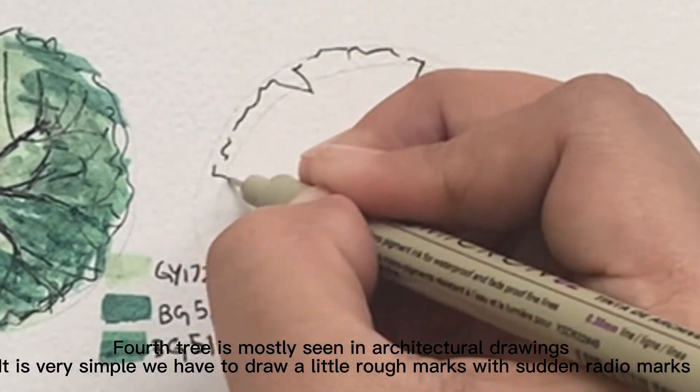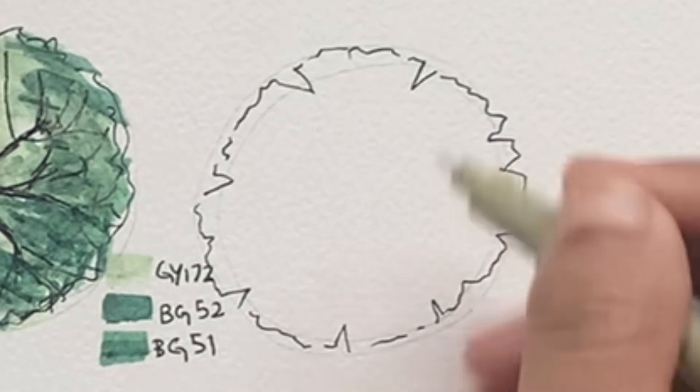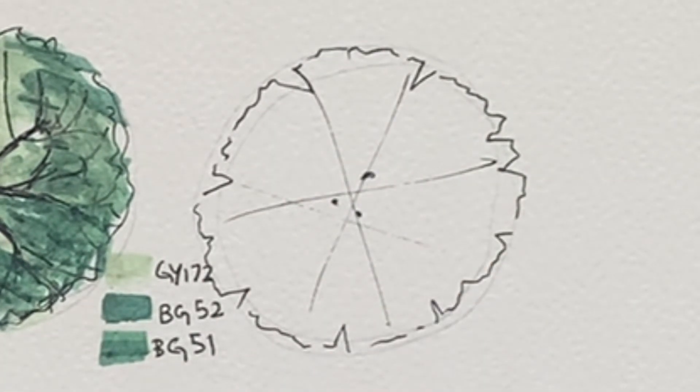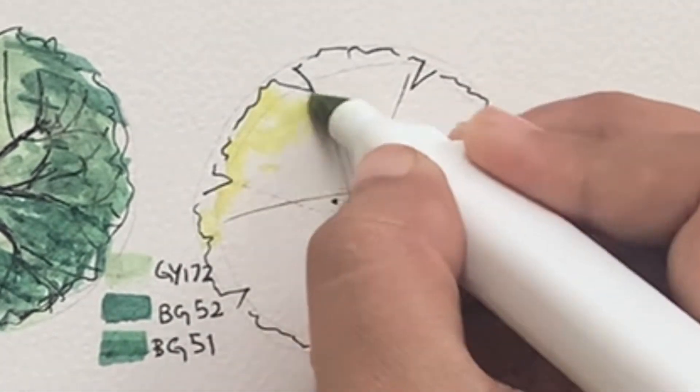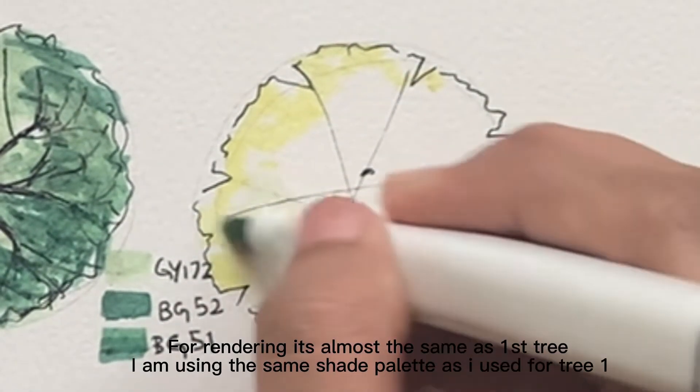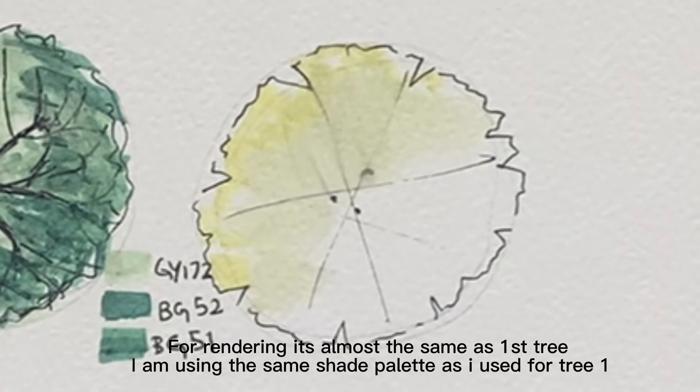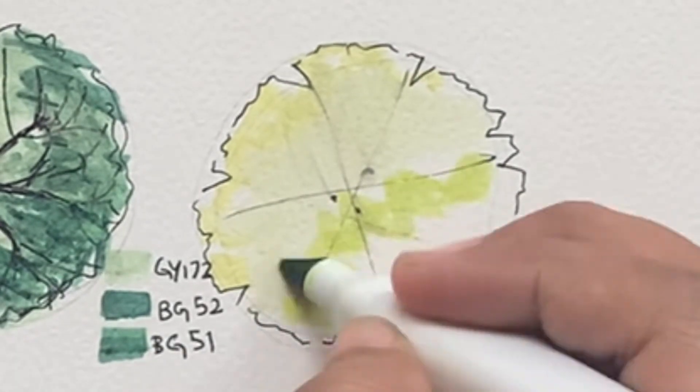Fourth tree is mostly seen in architectural drawings. It is very simple. We have to draw a little rough marks with sudden radial marks. For rendering it's almost the same as first tree. I am using the same shade palette as I used for tree one.